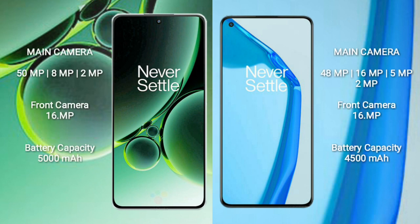OnePlus Nord 3 has a rear triple camera setup of 50MP plus 8MP plus 2MP, and a 16MP front camera. OnePlus 9R has a rear quad camera setup of 48MP plus 16MP plus 5MP plus 2MP, and a 16MP front camera.